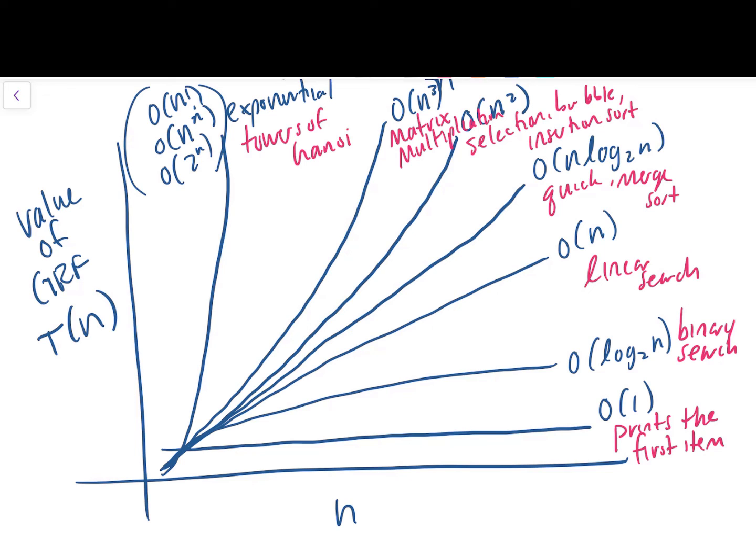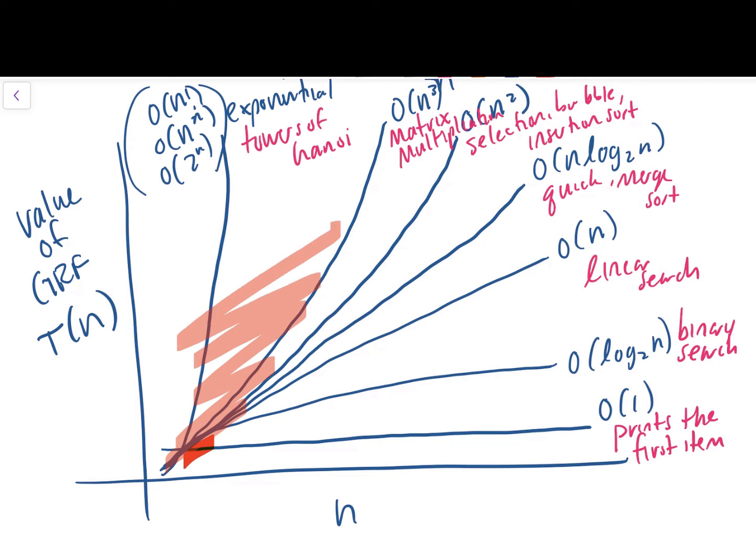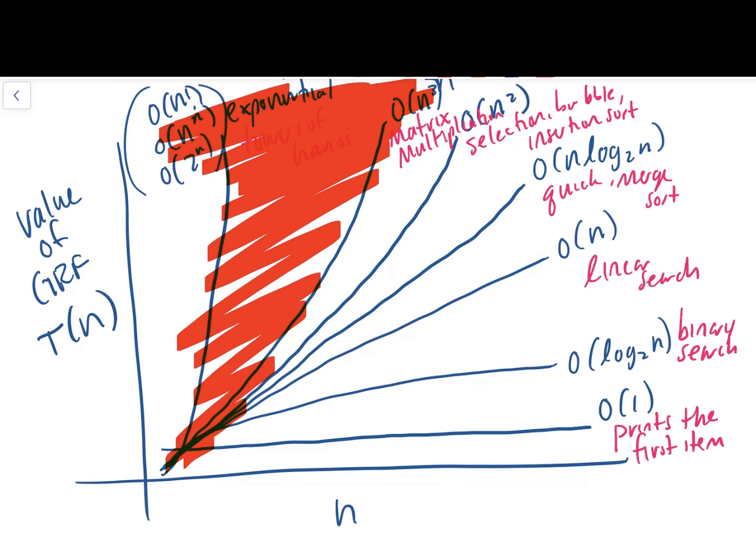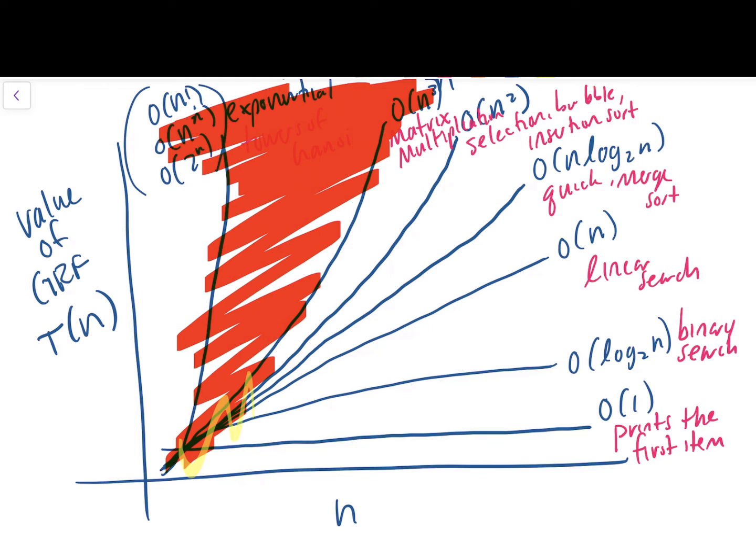And then the last line I'm going to draw here is a rapidly increasing line, which is going to represent big O of n factorial, big O of n to the n, big O of 2 to the n. These are all what we call exponential time complexity algorithms. And this family of algorithms, you want to avoid at all costs because even for small to medium sizes of n, these algorithms take a really, really, really long time to run.